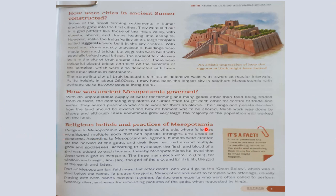Religion in Mesopotamia was traditionally polytheistic — meaning people worshiped more than one god, with followers worshiping multiple gods that had specific strengths and areas of concern. In monotheistic religions people worship only one god, while in polytheistic religions they worship many. According to Mesopotamian legends, humans were created for the service of the gods. According to mythology, the flesh and blood of a god was added to each human, so Mesopotamians believed there was a god in everyone.